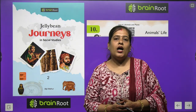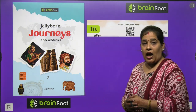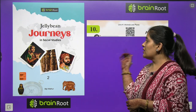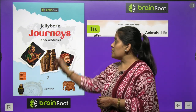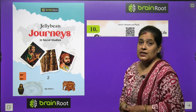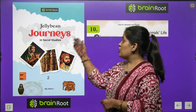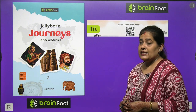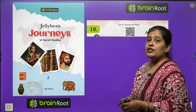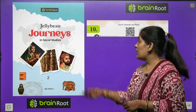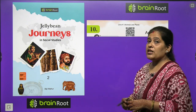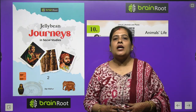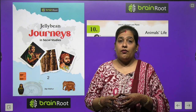Welcome back my dear kids. How are you? I hope you all are fine. Today we are going to start another chapter of our SST book by Brain Truth series. The name of our book is Jelly Bean Journeys in Social Studies, Class 2. Today we are going to start chapter number 10 and the name of our chapter is Animals Life. This chapter is about different types of animals.